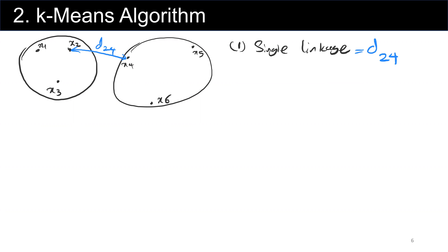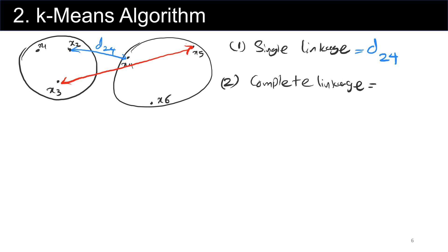The second category is called complete linkage. Complete linkage refers to the furthest points in the two groups. In this case, x sub 3 and x sub 5 are the furthest apart, so this is called d(3,5) — complete linkage. The next measure is to find all pairwise distances between the two clusters and then find their average, called average linkage.